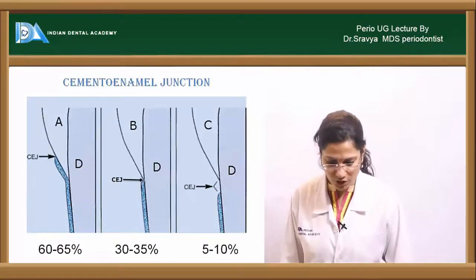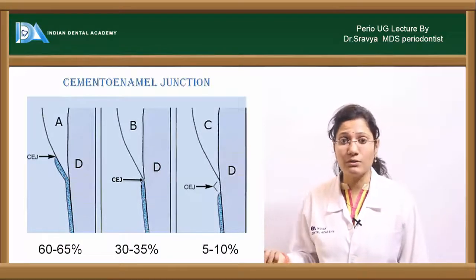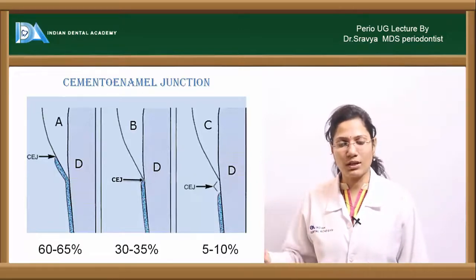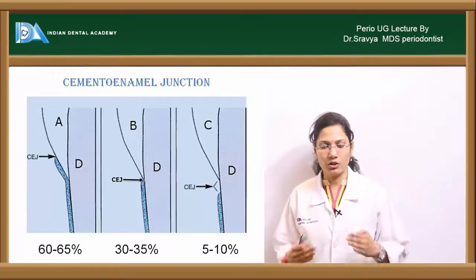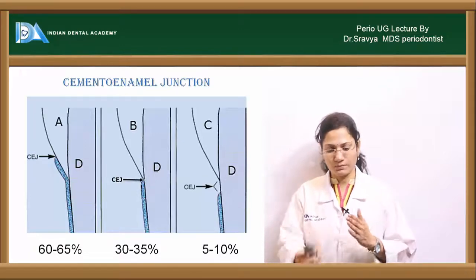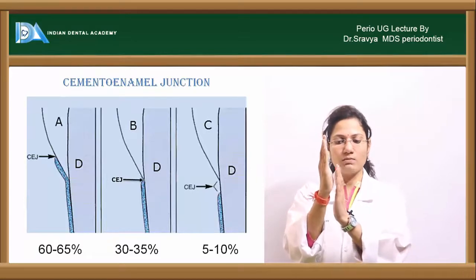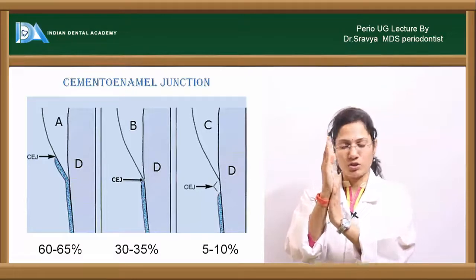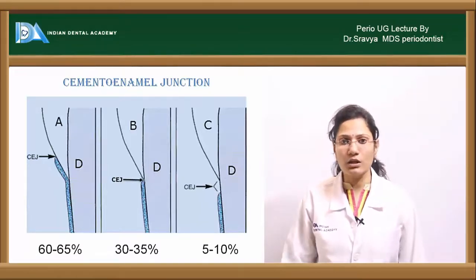The cementoenamel junction (CEJ) has three types. Type 1 is the overlap junction, where the cementum overlaps the enamel. This is the most common, seen in about 60–65% of individuals.